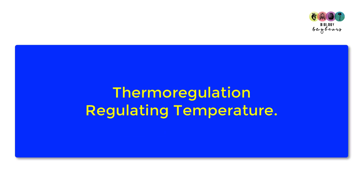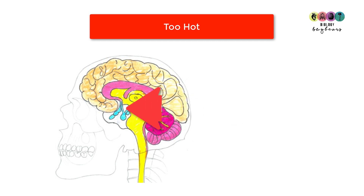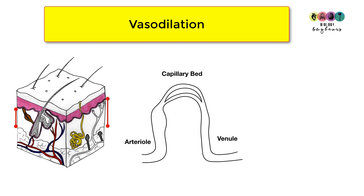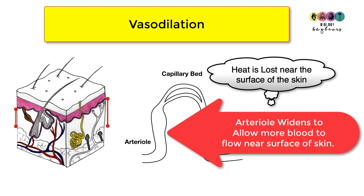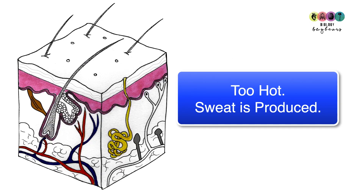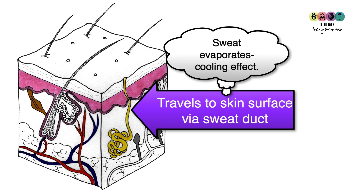The skin plays a very important role in thermoregulation — maintaining body temperature at approximately 37 degrees Celsius. If you're too hot, this excess heat is detected by the hypothalamus. The first response is vasodilation, where the arterioles in the dermis widen, allowing more blood to flow into the capillary beds near the skin surface. Heat is lost from the surface, which is why you look flushed when hot. We also produce sweat via the sweat glands, which travels through sweat ducts to the skin surface where it evaporates, having a cooling effect.